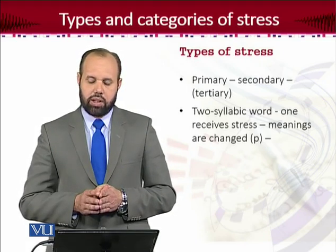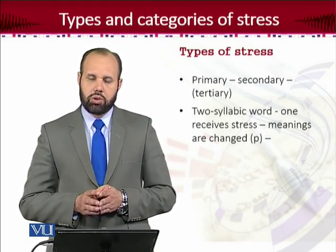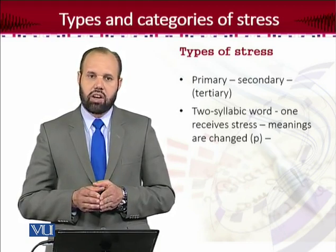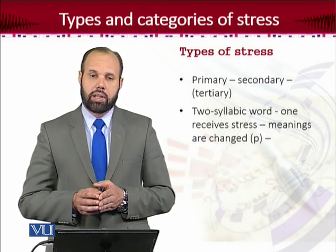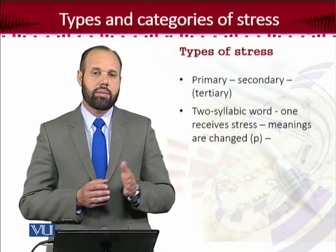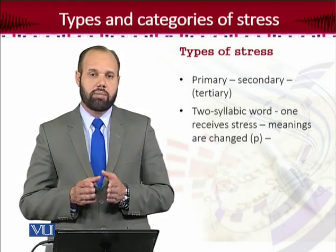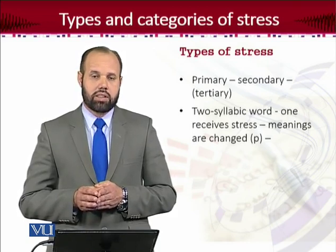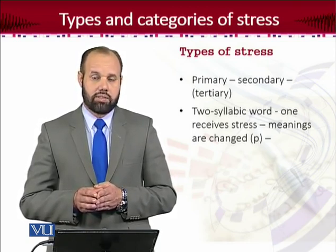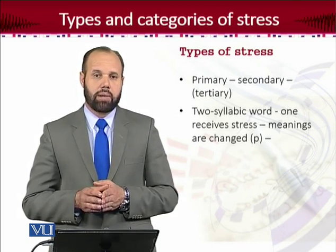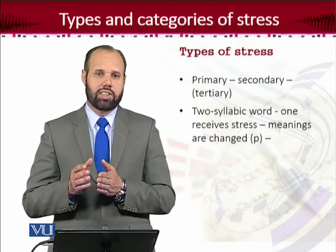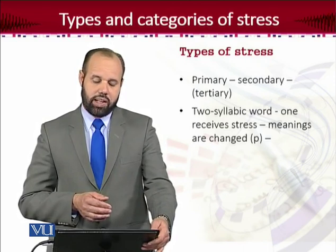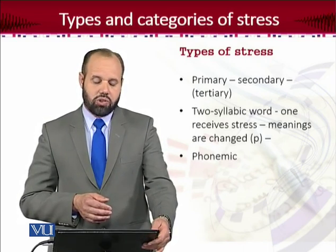In two-syllabic words, we are required to make one syllable prominent in a language like English, for the sake of the alteration of meaning. Because if the first syllable is stressed, then the meaning would be different, and if the second is stressed, then the meaning would change. For example, the noun 'insult' — but when it is a verb, then it becomes 'insult', to insult. So that's the difference because the category changes, and that's the phonemic level stress variation. For that purpose, the primary stress is important.